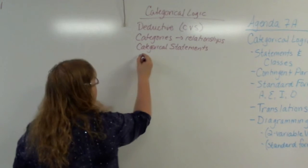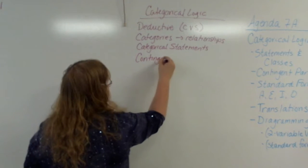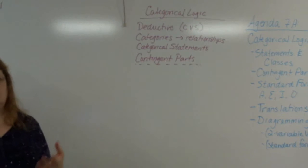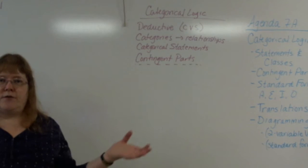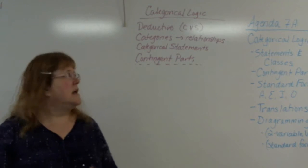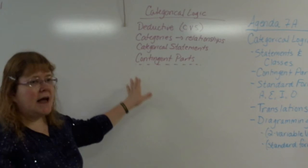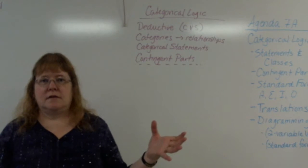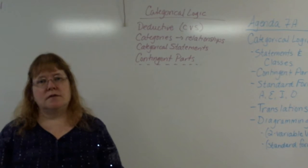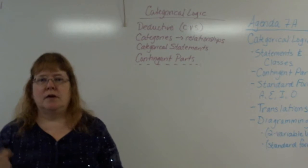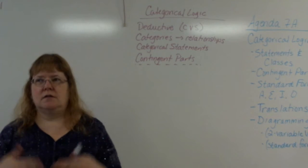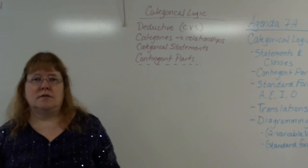The way we get at that is by looking at specific categorical statements and relationships inside those statements. Our statements have four possibilities — sounds like a theme in logic, right? We had four different possibilities for truth tables, and now in categorical logic we have four different possibilities for our categorical statements. The example we're going to go with, as Dr. Vaughn has in the book, is 'all cats are carnivores.'